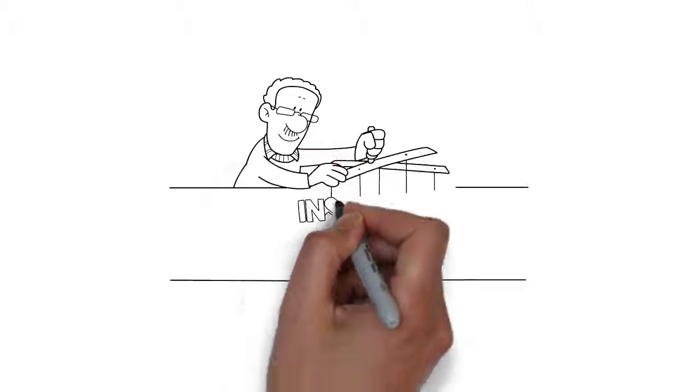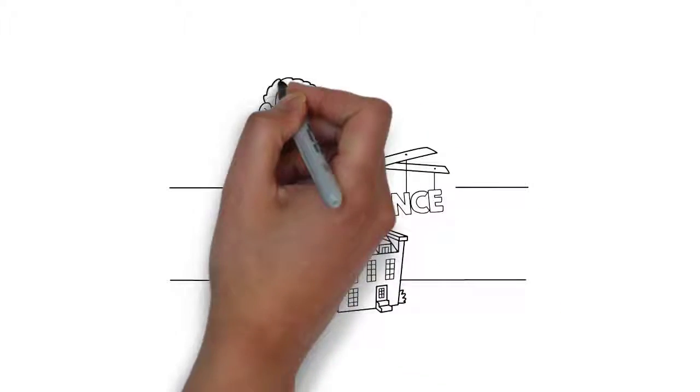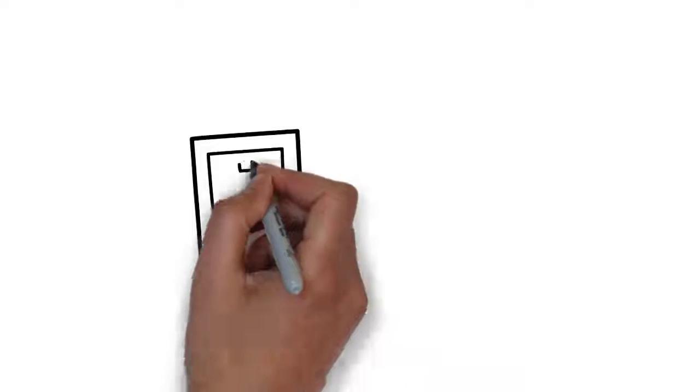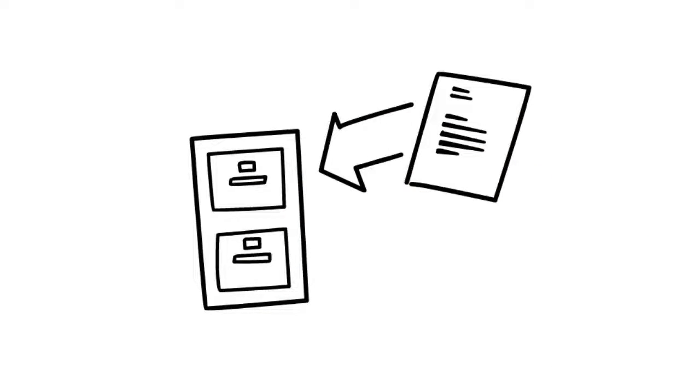Contact your insurance agent to terminate homeowner coverage on the home you've just sold as of the date you vacate the premises. Keep a copy of all closing documents.